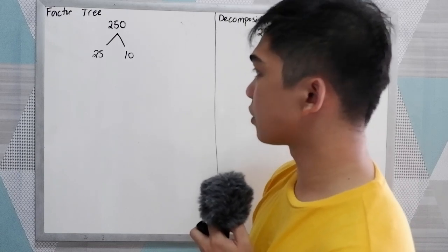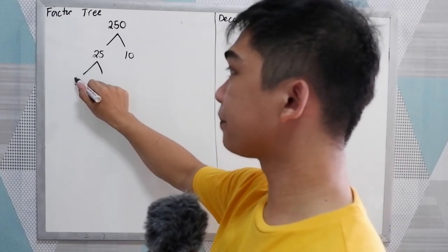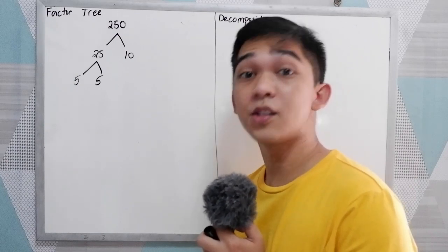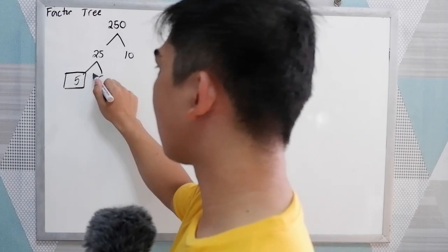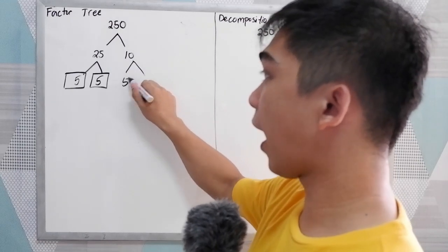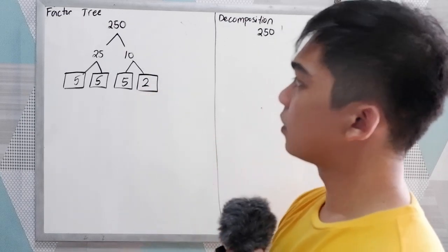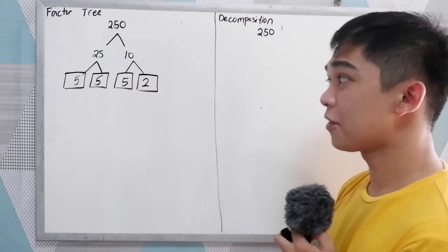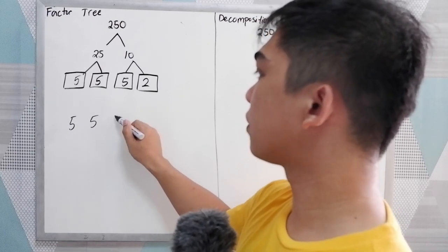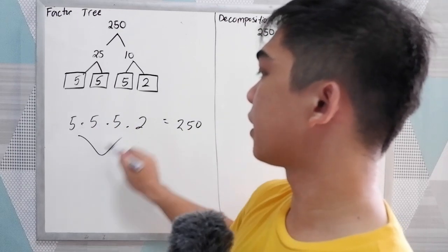Since 25 and 10 are not prime numbers, we need to find the other factors of each. For 25, that is 5 times 5. Since 5 is a prime number, box both 5s. For 10, the factors are 5 and 2. Since 5 is a prime number, box it, and since 2 is also a prime number, box 2 as well. So the prime factors of 250 are 5, 5, 5, and 2. Multiplying those together gives you 250.